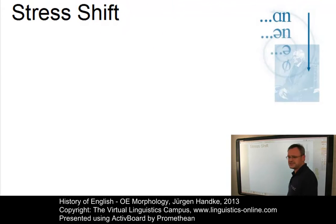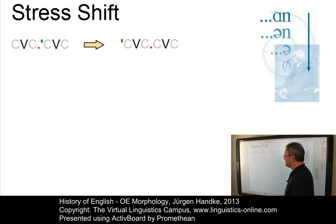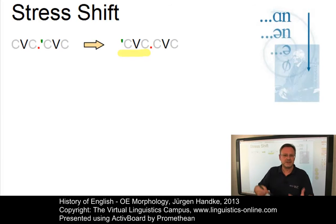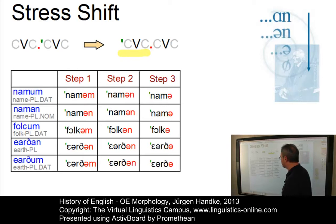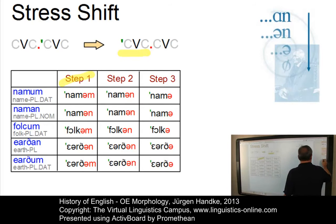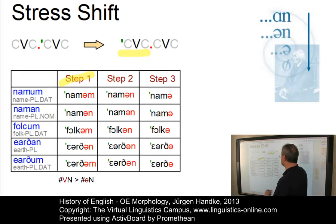An important weakening of the Old English system resulted from a suprasegmental effect. Root syllables were heavily stressed and they occurred primarily in the initial position of words. The stressing of the root syllables leads, of course, to a weakening of the remaining syllables. Here are some examples that illustrate what happened. There are several stages. At step one, the final vowel of a word is reduced to schwa: 'namum' became 'namen,' 'naman' became 'namen,' 'folcum' became 'folcen,' 'eorthan' became 'eorthen,' and 'eorthan' became 'eorthen.'